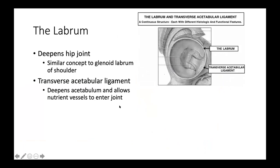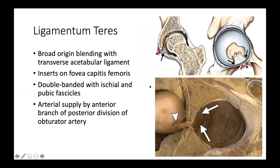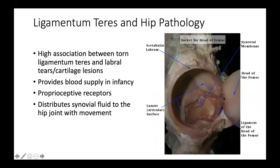Inside the hip joint, you have the labrum, which deepens the hip joint — similar to the glenoid labrum in the shoulder. There is also the transverse acetabular ligament, which deepens the acetabulum and allows some nutrients to enter the joint. On the femoral head, the ligamentum teres inserts at the fovea capitis femoris. It is double-banded with ischial and pubic fascicles, has its own blood supply, and may provide proprioception and distribute synovial fluid. A tear in the ligamentum teres is associated with cartilage and labral damage.